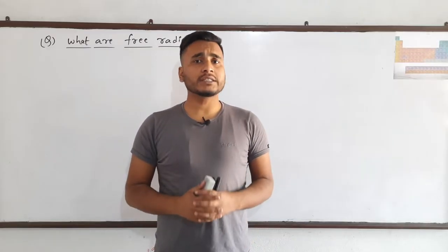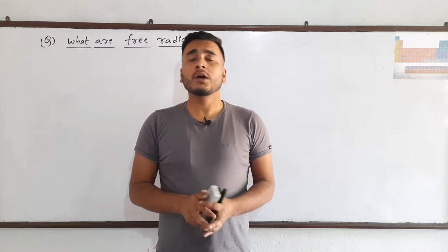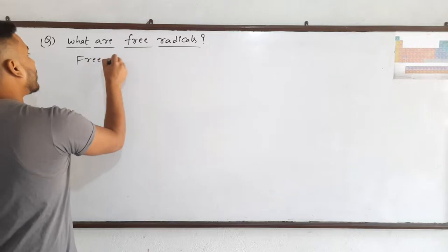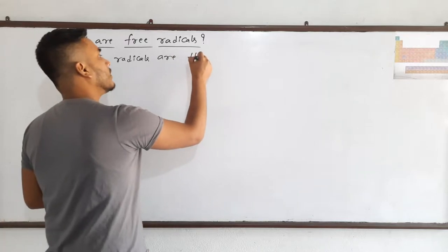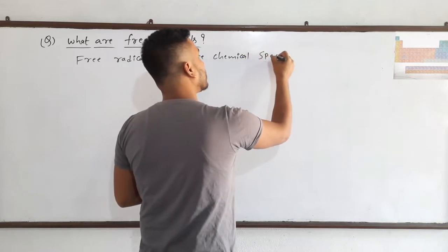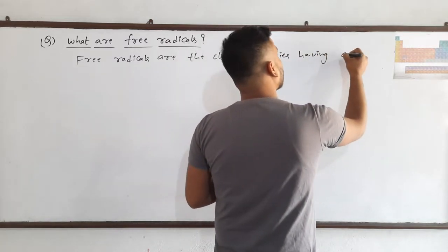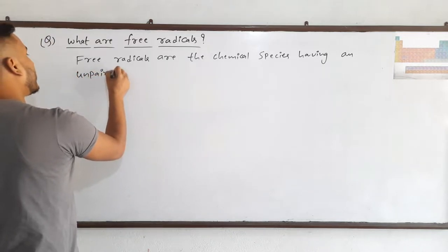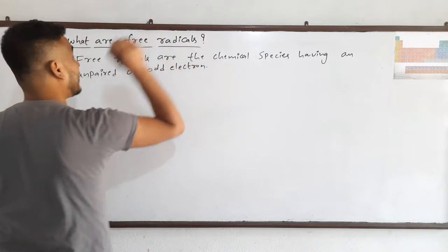First of all we need to understand what free radicals actually are. Free radicals are the chemical species having an unpaired or an odd electron.